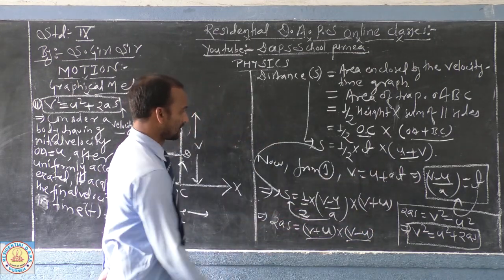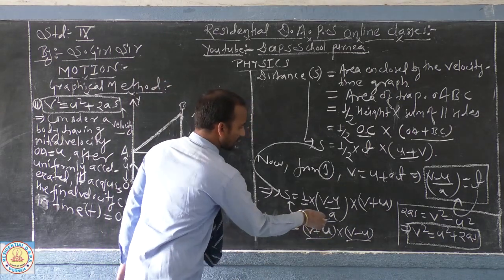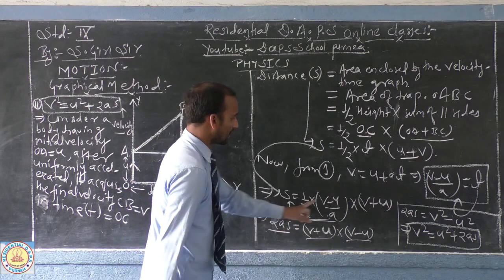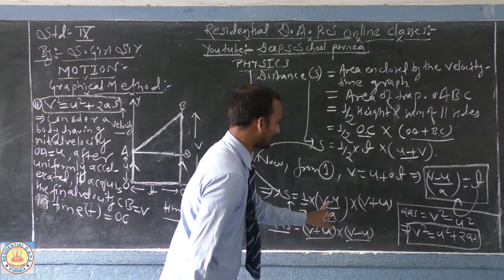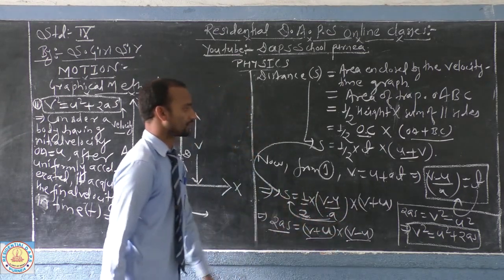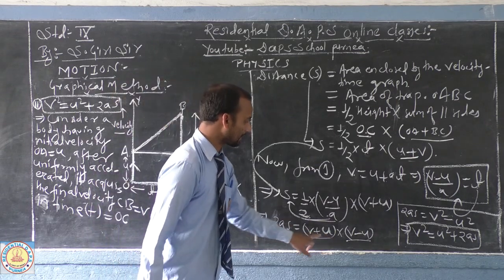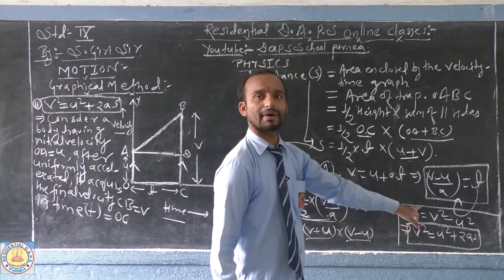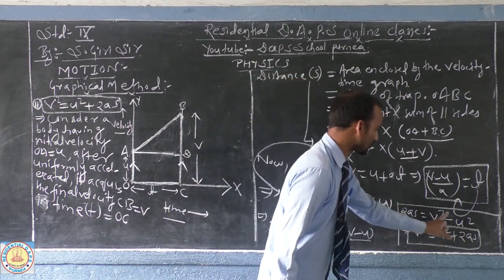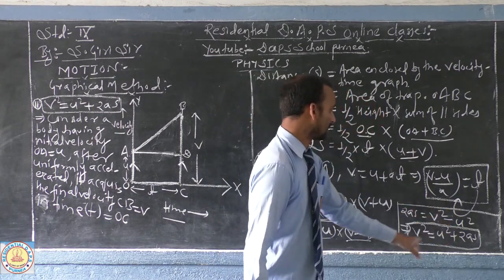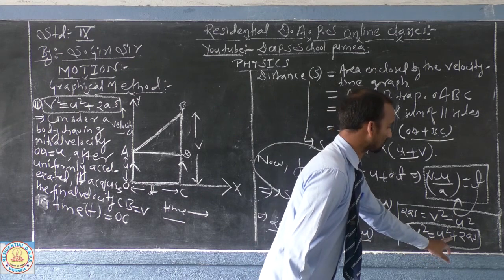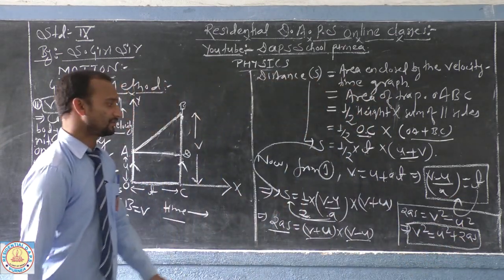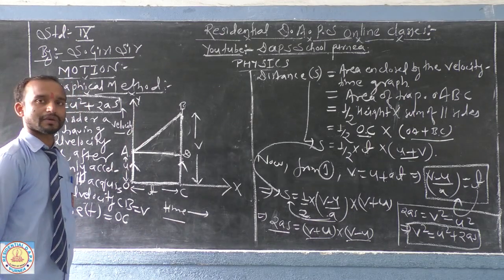Rearranging, the denominator 2a becomes a multiplier of s, giving 2as = (v + u)(v − u). Applying the identity (a + b)(a − b) = a² − b², we get 2as = v² − u², and arranging this gives v² = u² + 2as. This is the third equation of motion derived by the graphical method.